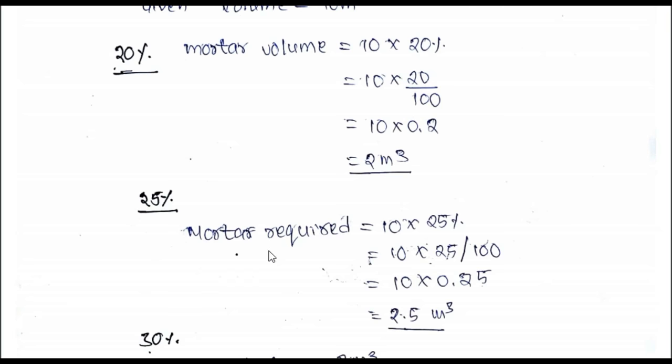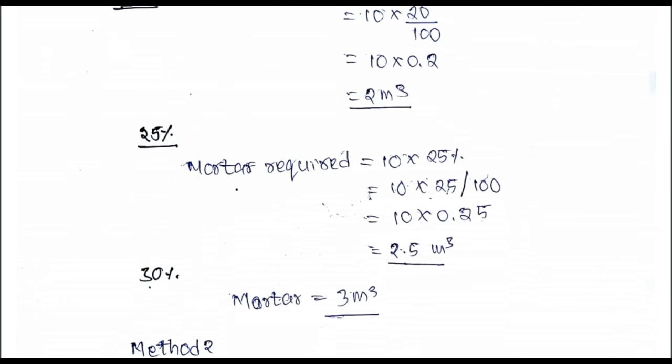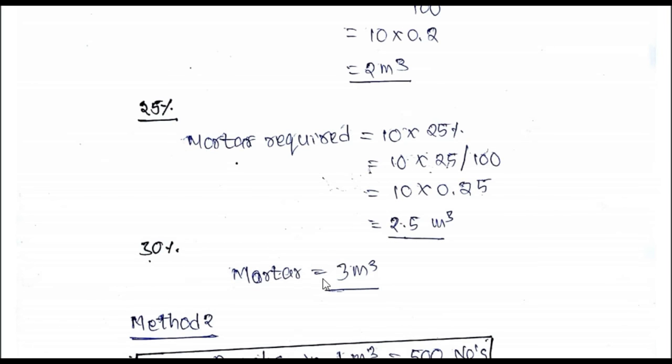Then I have assumed it as 25 percent. Mortar required equals 10 into 0.25, which equals 2.5 cubic meters. In case of 30 percent it will be 3 cubic meters.